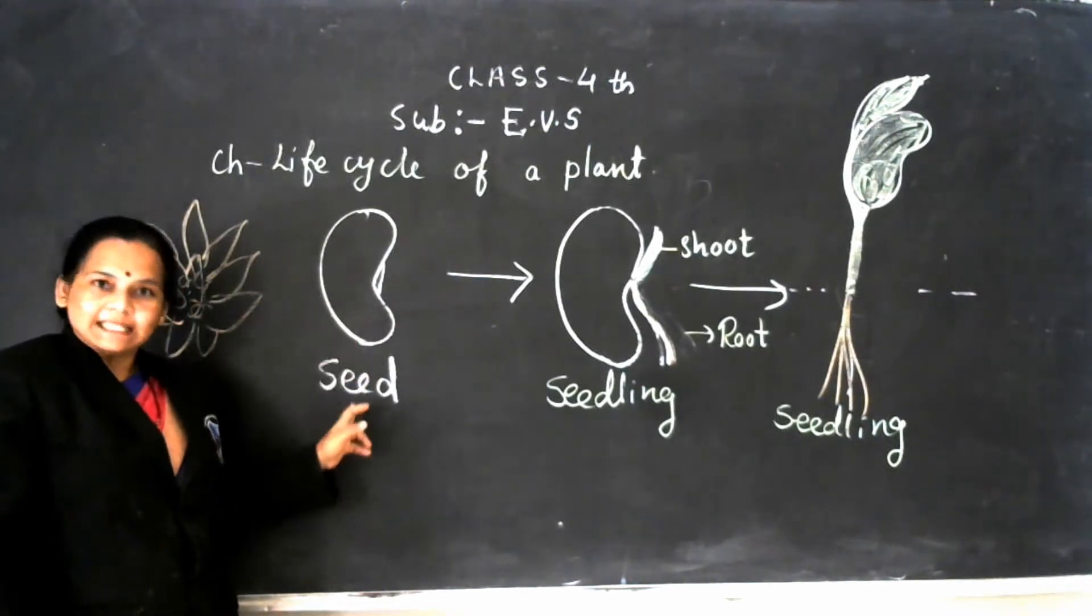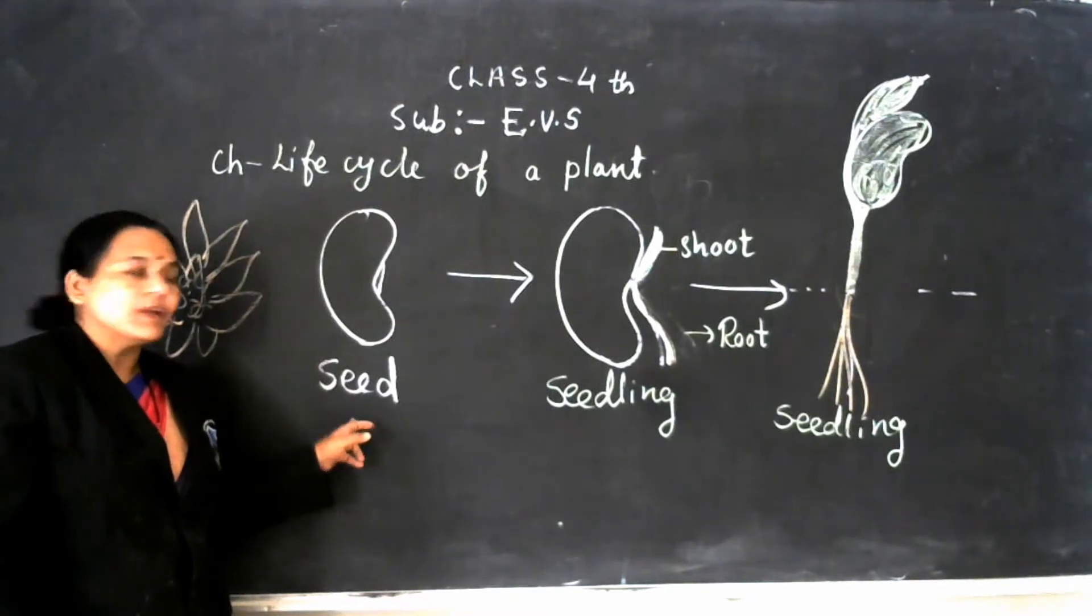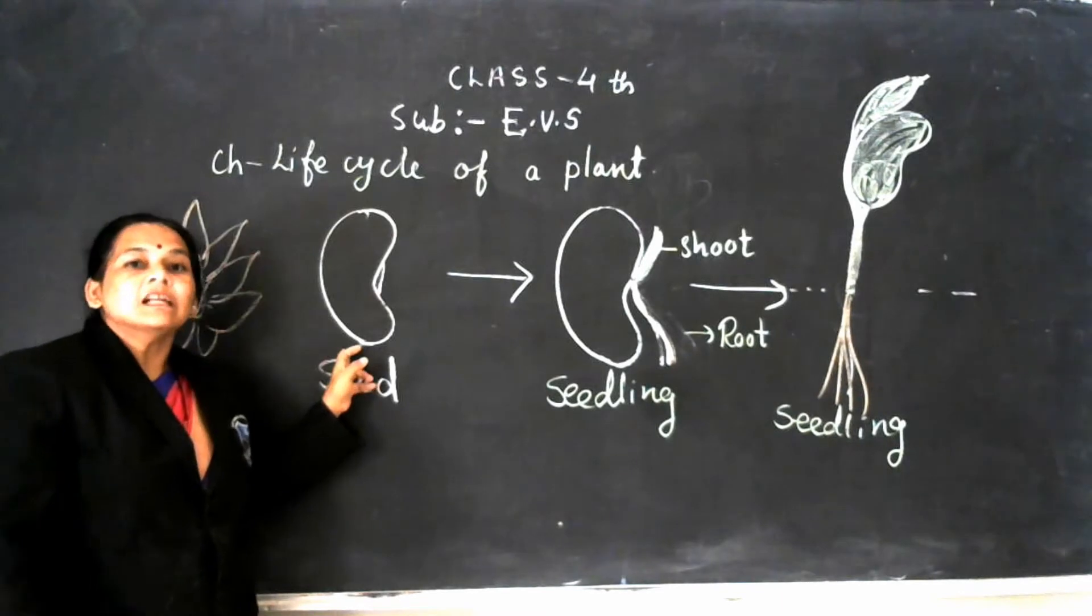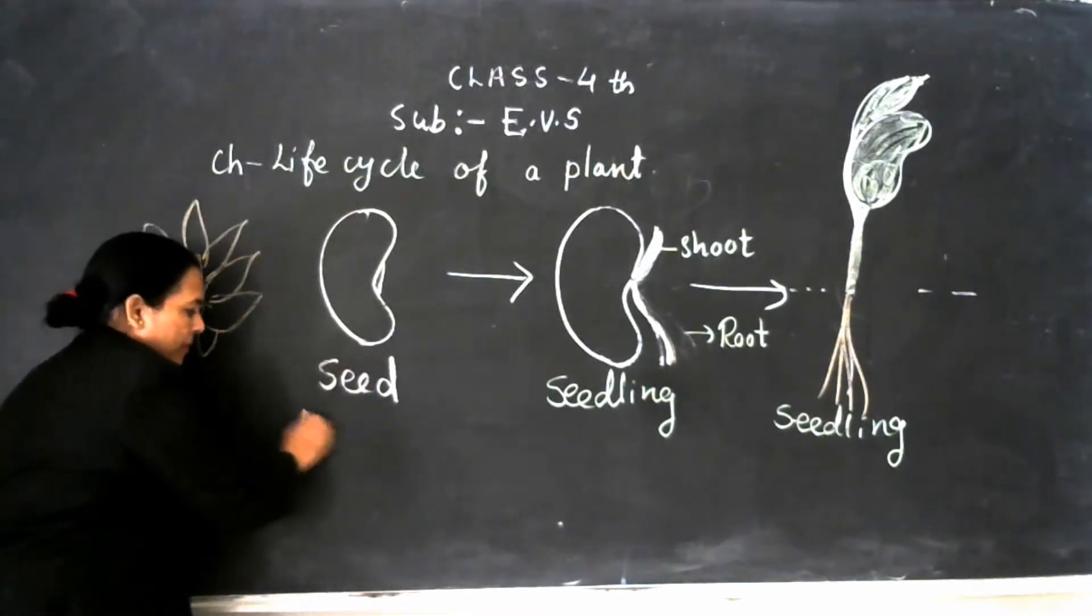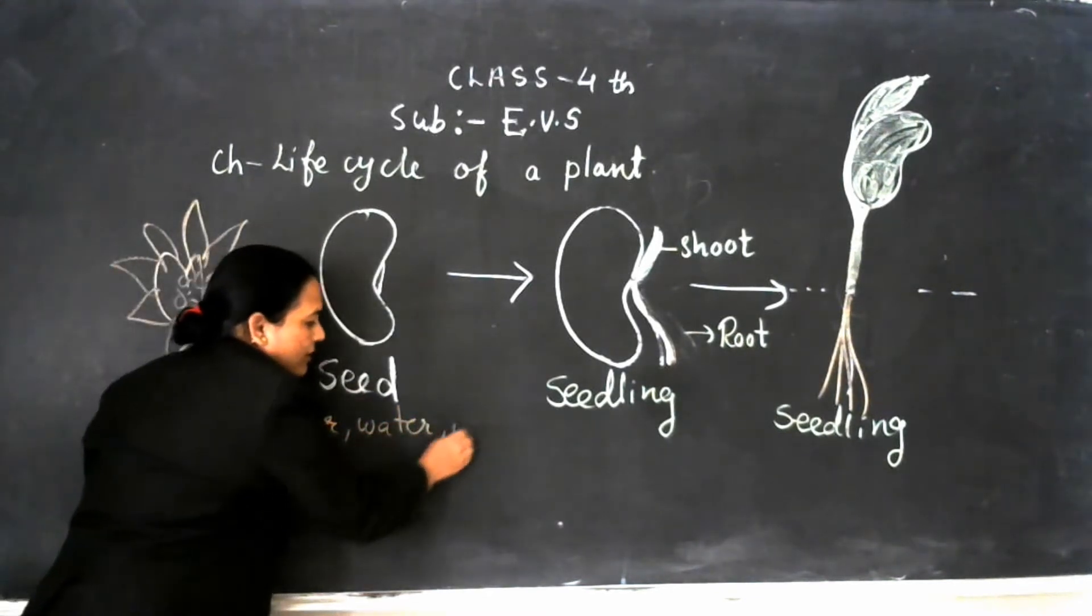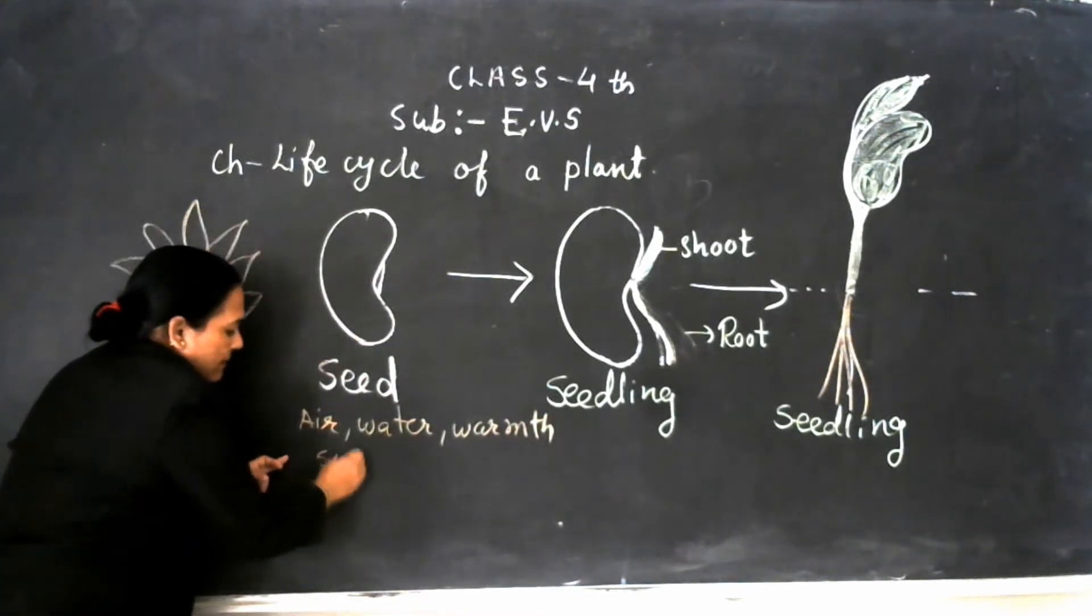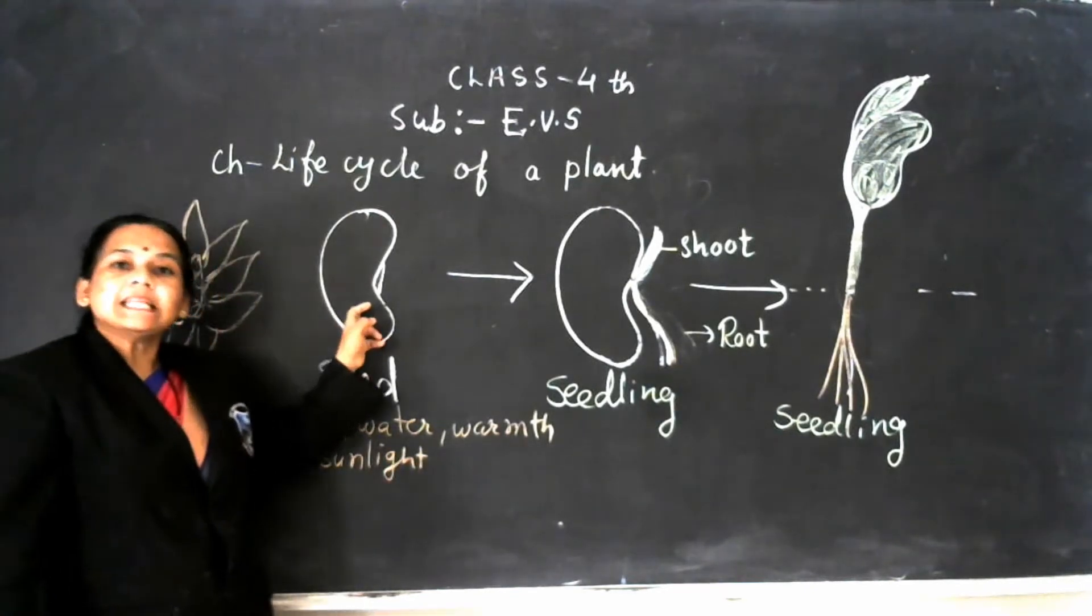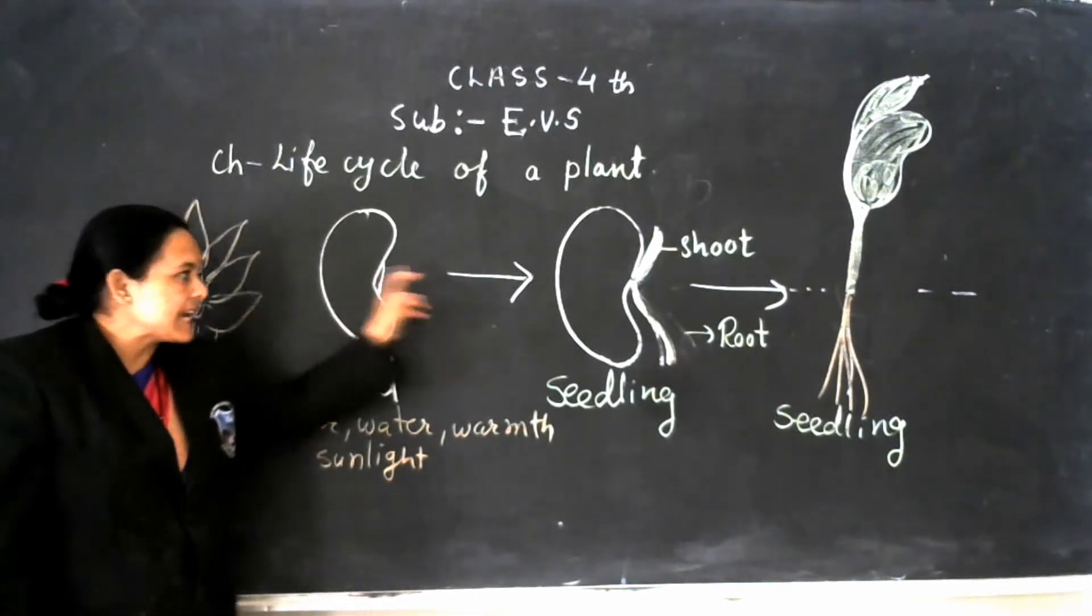First, seed. That seed is the beginning point, the starting of the life cycle of a plant. When seed gets the proper amount of air, water, warmth (that means sunlight), also soil, the seed starts to germinate. That means in the second stage.